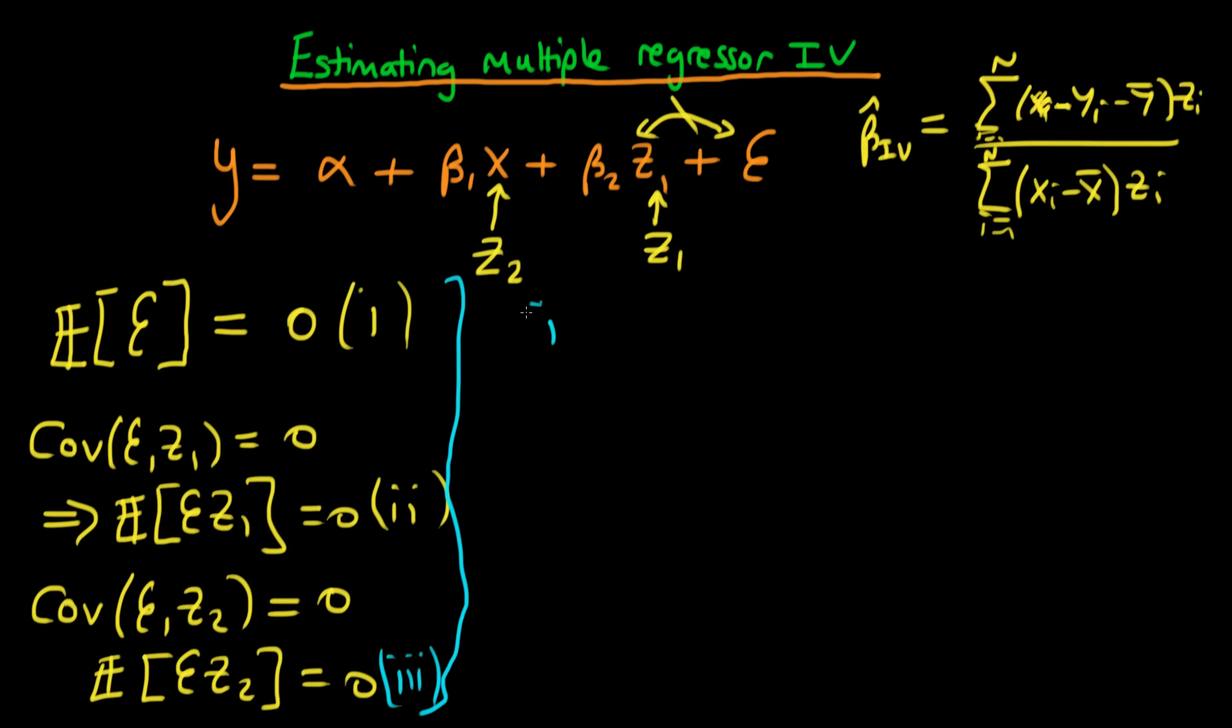So condition one implies that the sample analog of this is that the sum from i equals 1 to n of the error, so the estimated error is just yi minus alpha minus beta1 times xi minus beta2 times z1i has to be equal to zero. And note that we don't know alpha, beta1 and beta2, so we're estimating them.